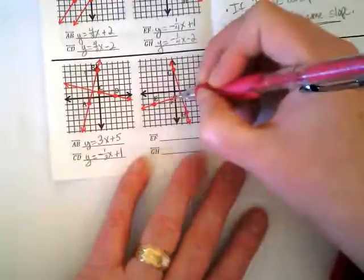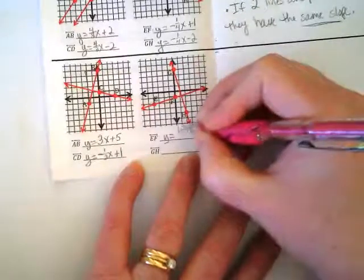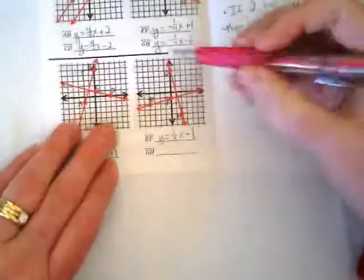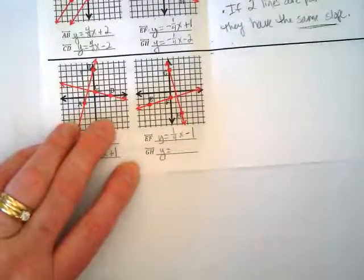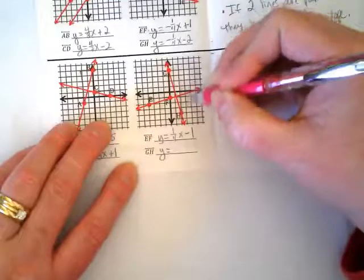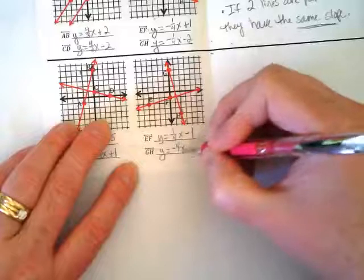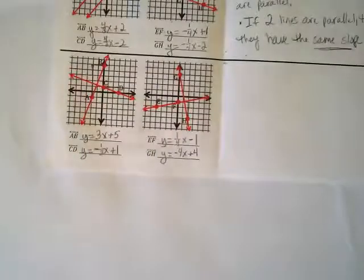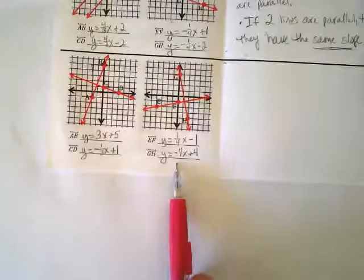Let's look at the second perpendicular pair. Line EF — is it positive or negative? Positive. So y = (1/4)x − 1. What about line GH — positive or negative? Negative. Anyone want to predict the slope? I think it's four over one. If I rise up eight and run two, that's 8/2 = 4. So y = −4x + 4.